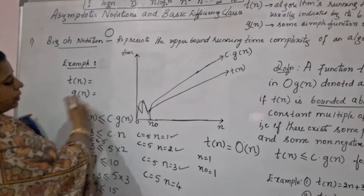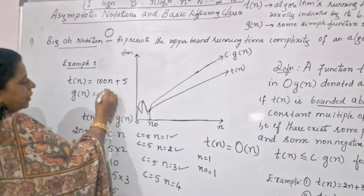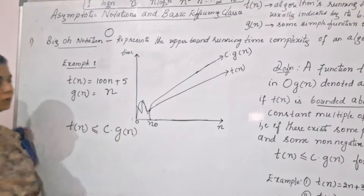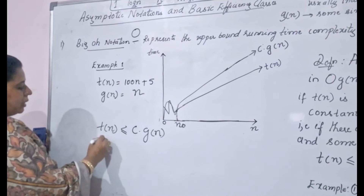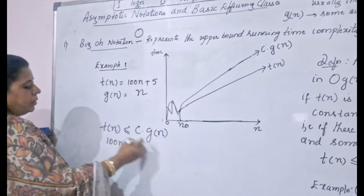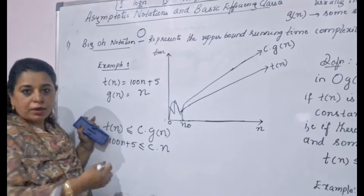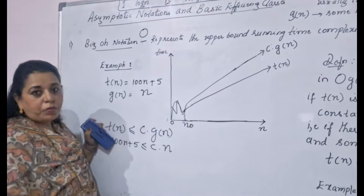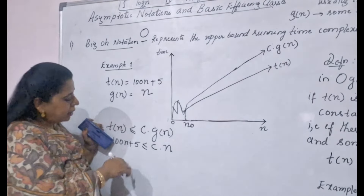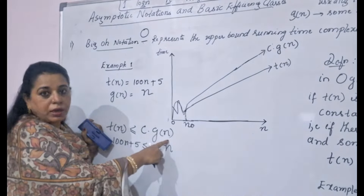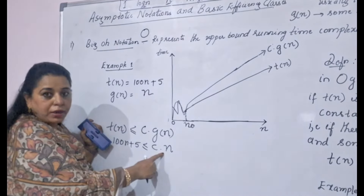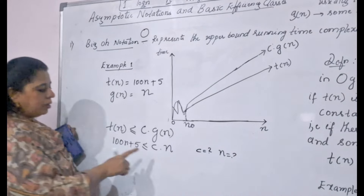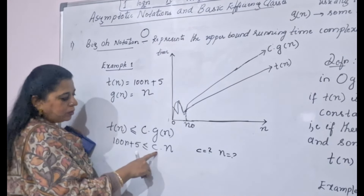Suppose t(n) = 100n + 5 and g(n) = n. The definition gives us t(n) ≤ c·g(n), so substituting: 100n + 5 ≤ c·n. Now find appropriate values of c and n. Use your mathematical knowledge — here you have constants 100 and 5, so 105. If you take c = 105 and n = 1, the right-hand side gives exactly 105. You don't have to start with c = 1; just check the constants and come up with an appropriate value.